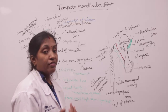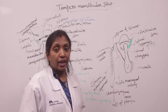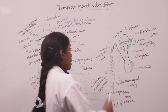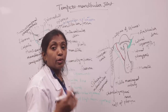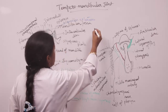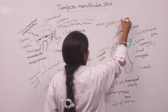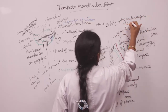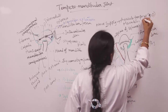Blood supply of the temporomandibular joint is from the superficial temporal artery and maxillary artery, which are terminal branches of the external carotid artery. Nerve supply is from the auriculotemporal nerve, a branch of the posterior division of the mandibular nerve, and the masseteric nerve, a branch of the anterior division of the mandibular nerve.